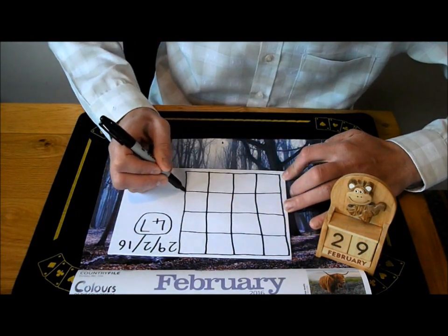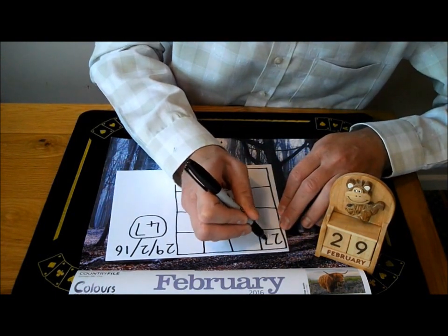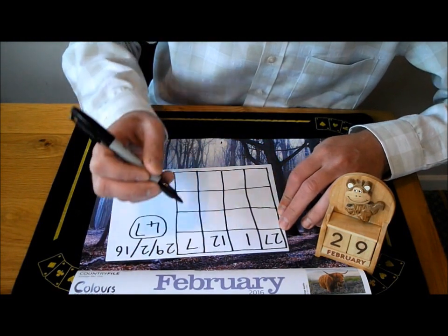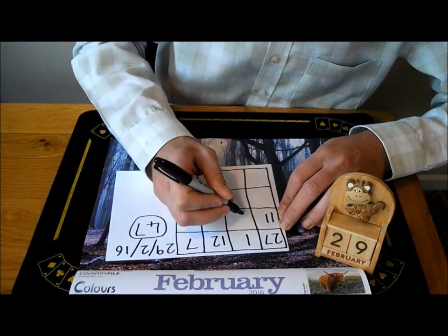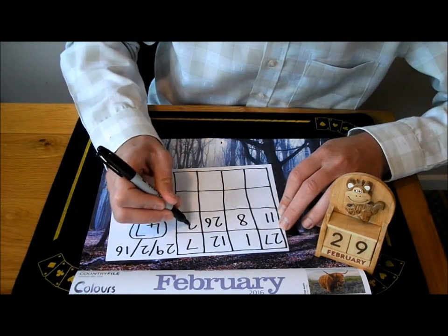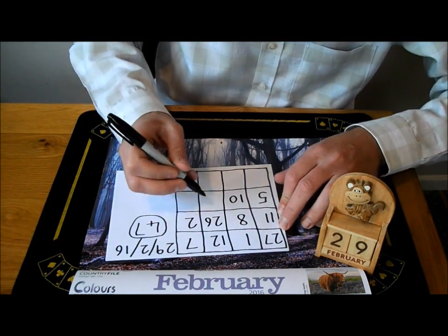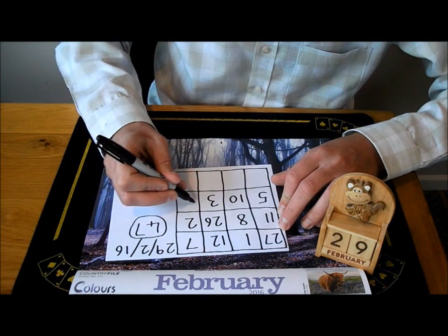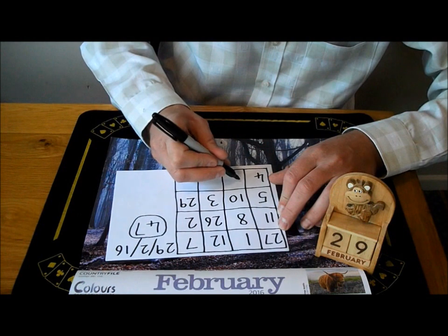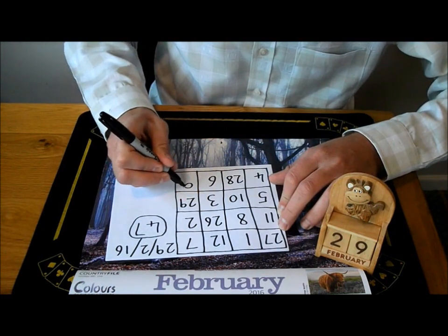Now you're going to put a number in each square on the grid. I'll put 27, 1, 12, 7, 11, 8, 26, 2, 5, 10, 3, 29, 4, 28, 6, and 9.